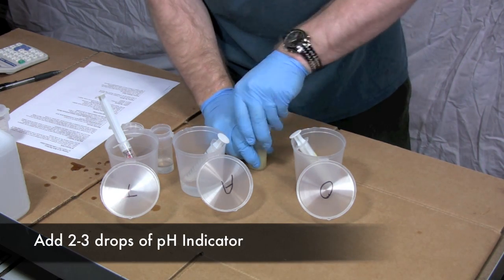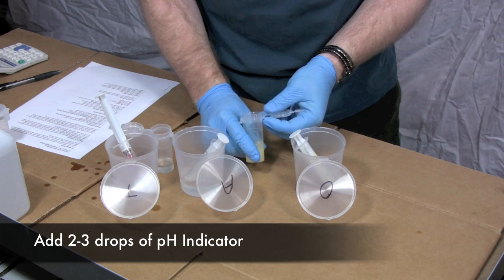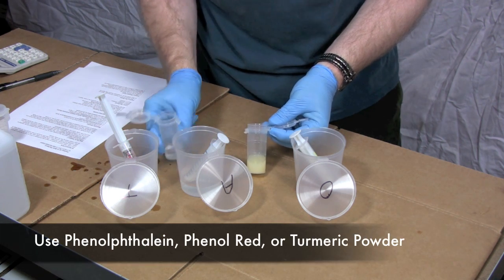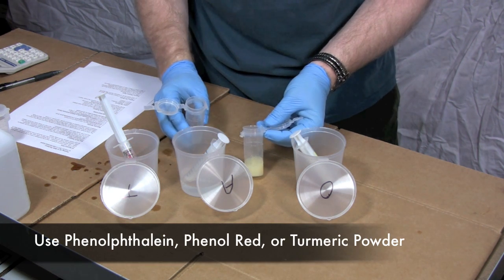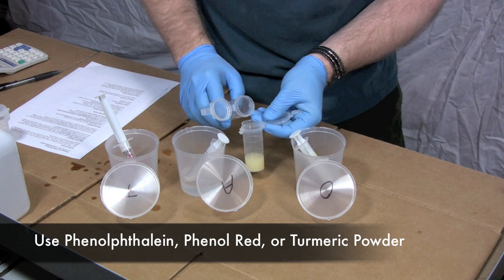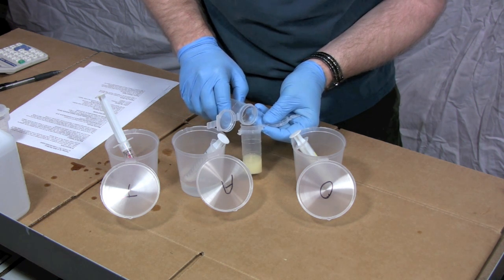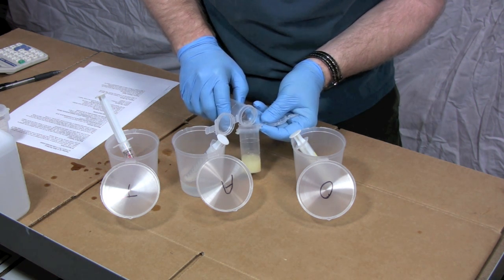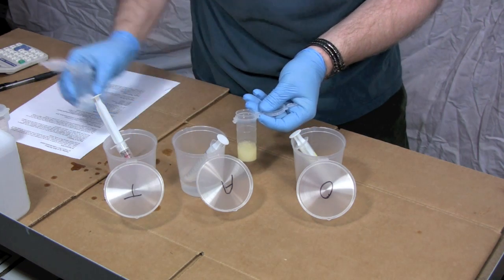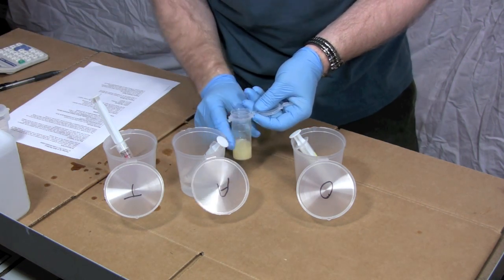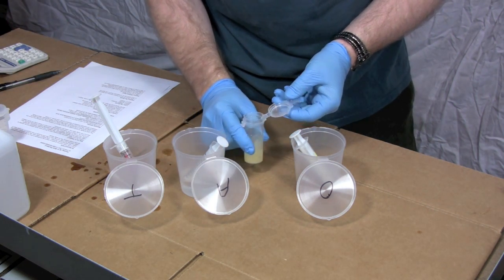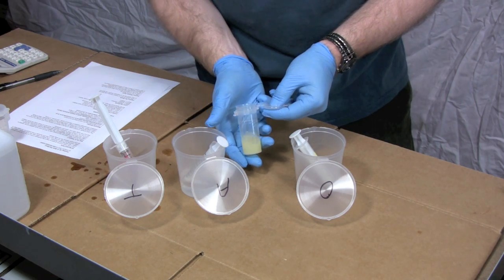The next step is I'm going to put a couple drops of phenolphthalein in there. Now again, you can use turmeric powder or phenol red, but I've got phenolphthalein here today. It doesn't really need to be much at all. What this is doing is it's just going to change color when we hit a certain pH. Our sample is now ready to titrate.